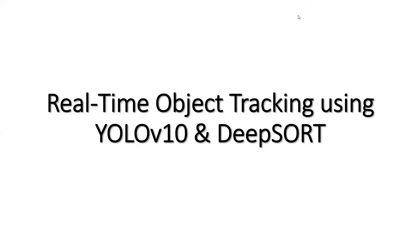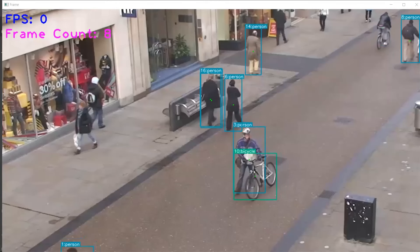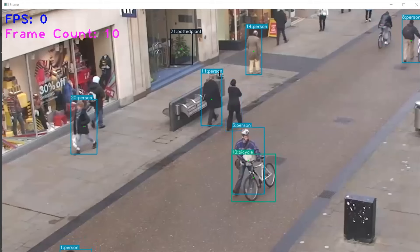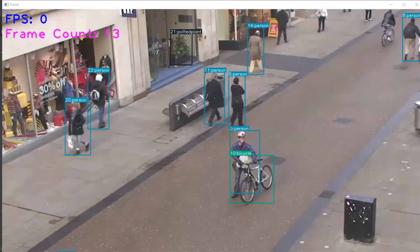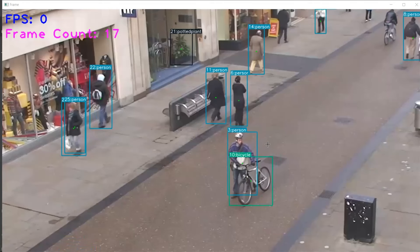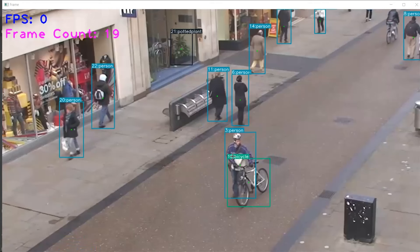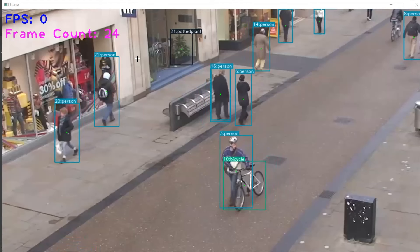First I will present a demo of how everything works and then we will start writing the code. You can see we have assigned a unique ID to each of the detected objects. For this person, the unique ID 14 is assigned. For this person, unique ID 11 is assigned. This person has unique ID 6, this person has unique ID 22, this person has unique ID 25. For this bicycle, unique ID 10 is assigned, and for this potted plant, unique ID 21 is assigned.